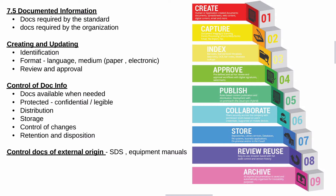We also need to control distribution, storage, and changes to documents, and address the retention and disposition of documented information. Importantly, we need to control documents of external origin, such as safety data sheets and machinery and equipment manuals — essential documents containing hazard and control information specific to substances or equipment on site.